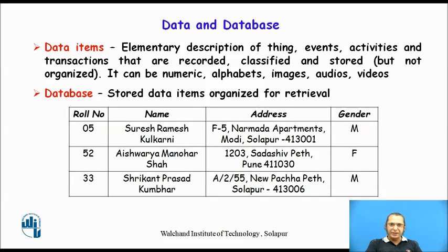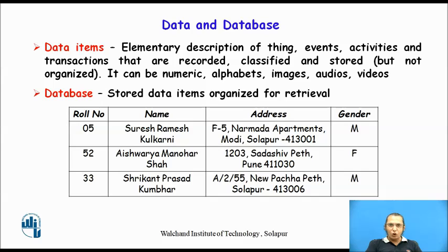If we look at the difference between data and a database: data is just an elementary description of things, events, activities or transactions but not necessarily stored in an organized way. When we talk about the database, the data atoms are stored in an organized or systematic way so that it will be easy for retrieval. For example, data corresponding to a class where I have stored the role number of a student, then his name, address and gender, stored in rows and columns.